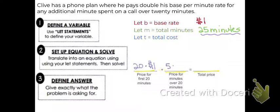Well, remember, he pays double his base rate. That means 2 times his base rate. So he'd be charged $2 instead of $1. So 20 times 1 is 20. 5 times 2 is 10. If we add those together, we get $30. That is his price.